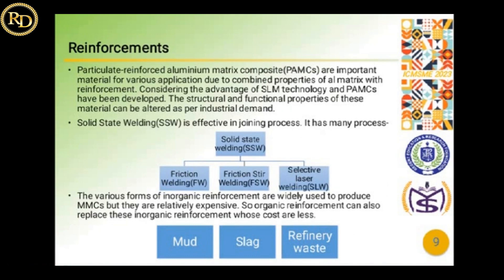The aluminum composite depends highly on the type of reinforcement used. Particulate reinforced aluminum matrix composites are important materials for various applications due to the different properties of different matrices. Many technologies are used for reinforcing the aluminum matrix.